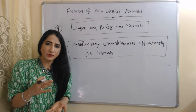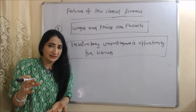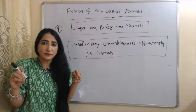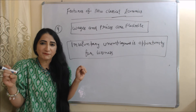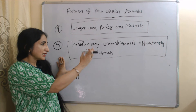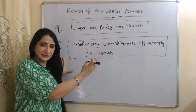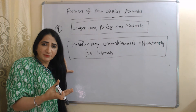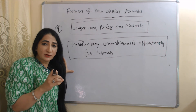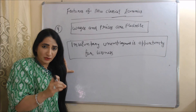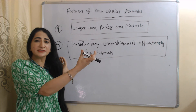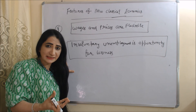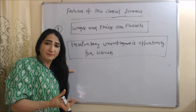Next, according to new classical economics, wages and prices are flexible. According to new Keynesians, wages and prices are sticky and rigid, but according to new classicals, wages and prices are flexible. Also, according to new Keynesians, involuntary unemployment exists in the economy, but according to new classicals, full employment exists and involuntary unemployment is actually a good opportunity for businesses because they can pay less and earn more profit.